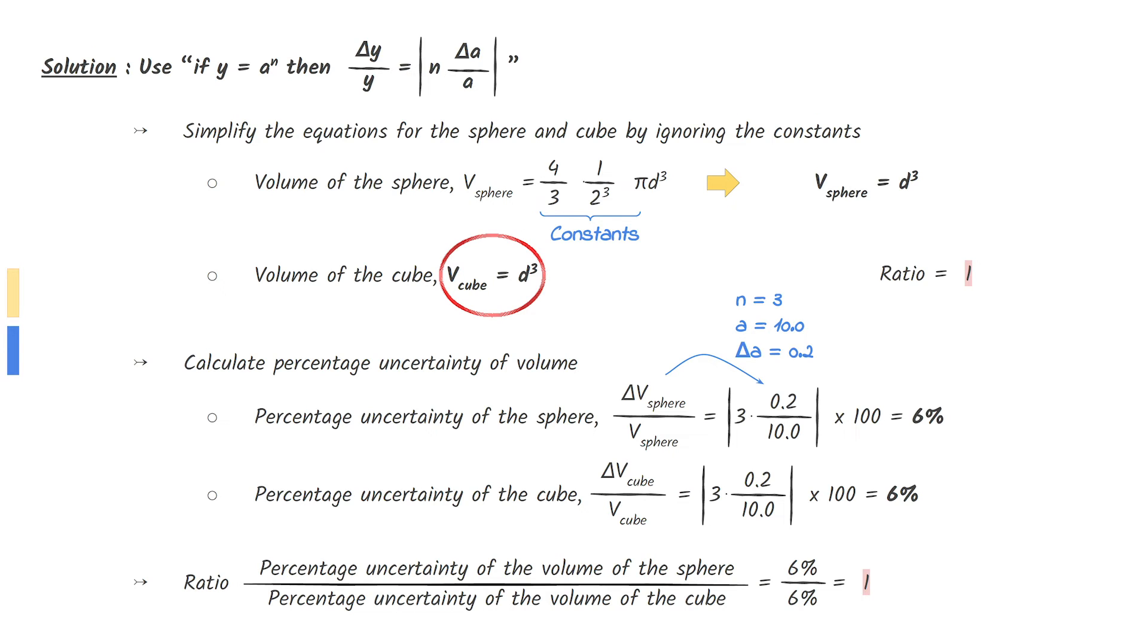From these two equations alone, we can know that the ratio of the percentage uncertainty must be 1, since they have the same simplified equation giving us the same percentage uncertainty.